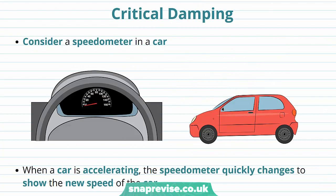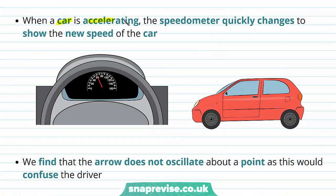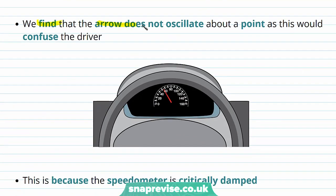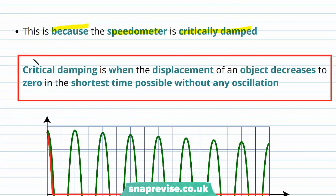Now we're going to talk in more detail about critical damping. Consider a speedometer in a car. When the car is at rest, the speedometer shows a value of zero. When a car is accelerating, the speedometer quickly changes to show the new speed — say our car accelerates to reach 60 km per hour, the speedometer goes from zero to 60. We find that the arrow does not oscillate about a point, as this would confuse the driver, and the reason it does not oscillate is because the speedometer is critically damped.